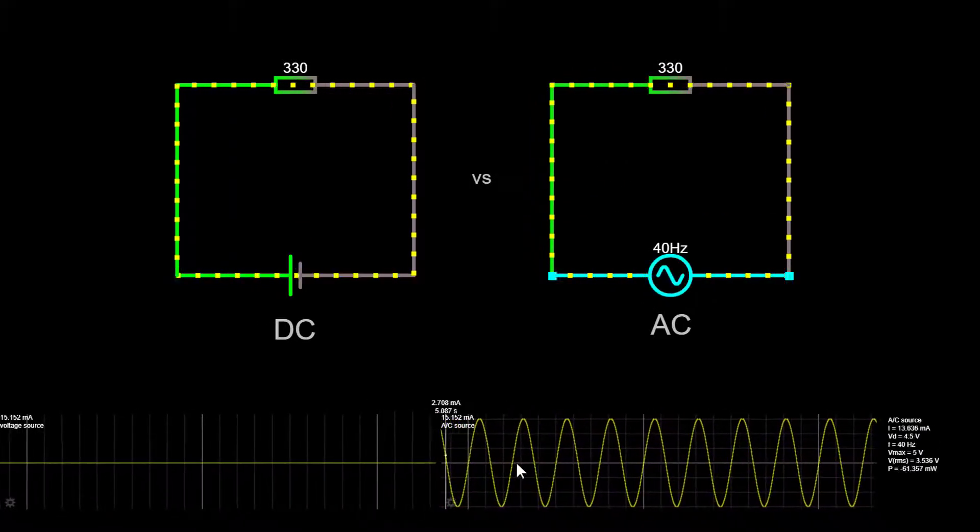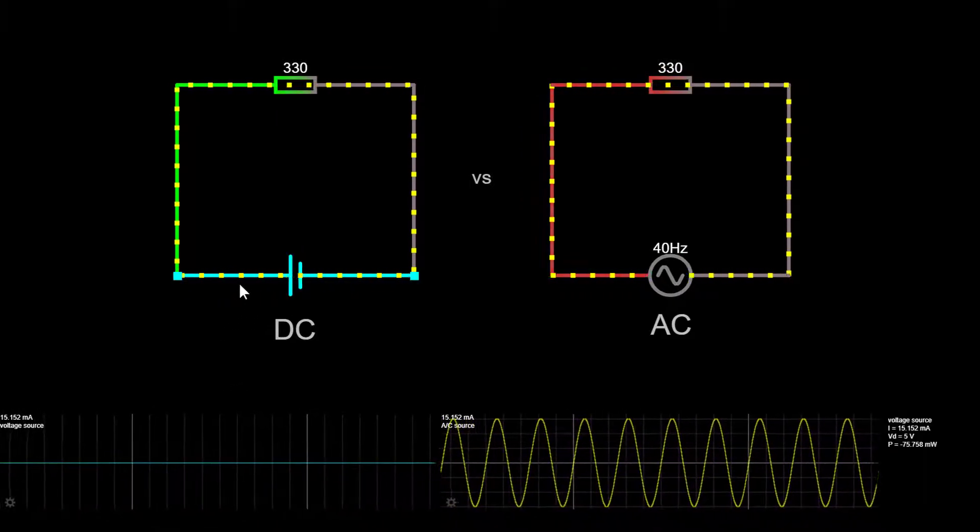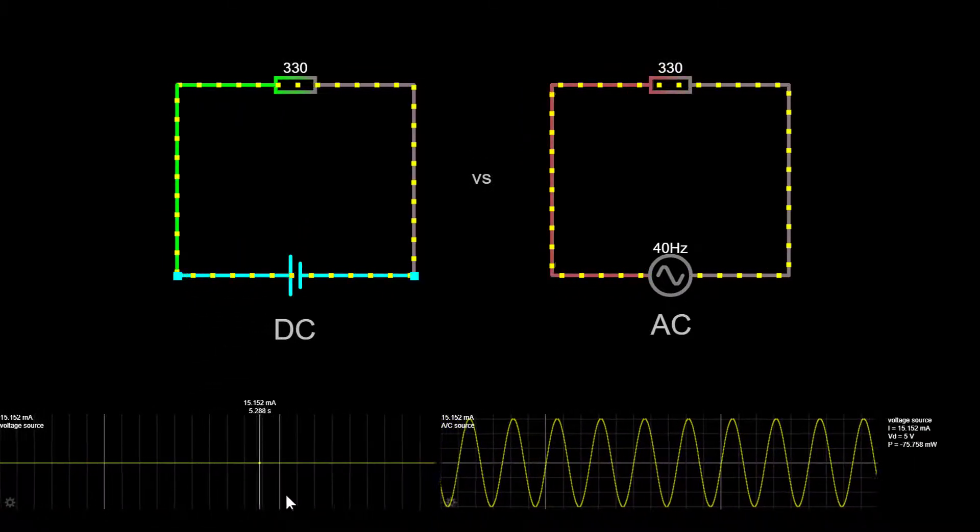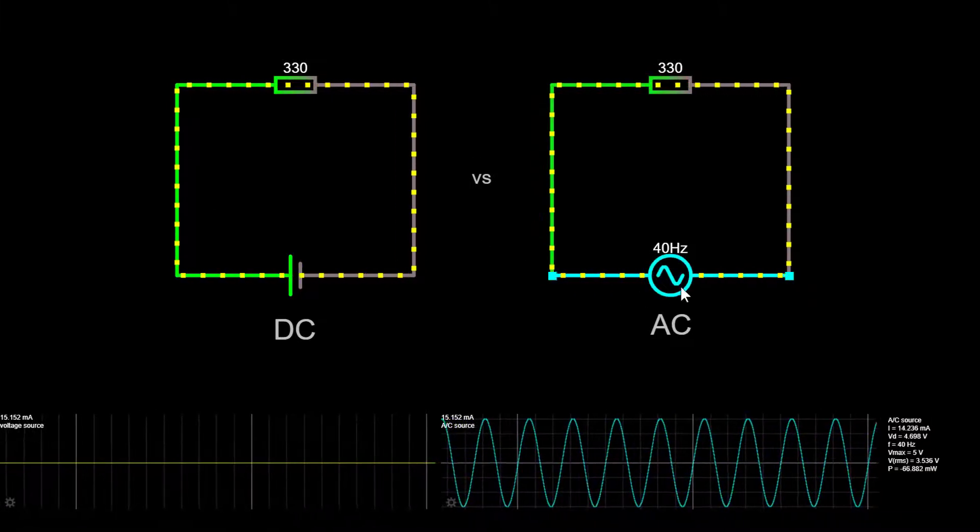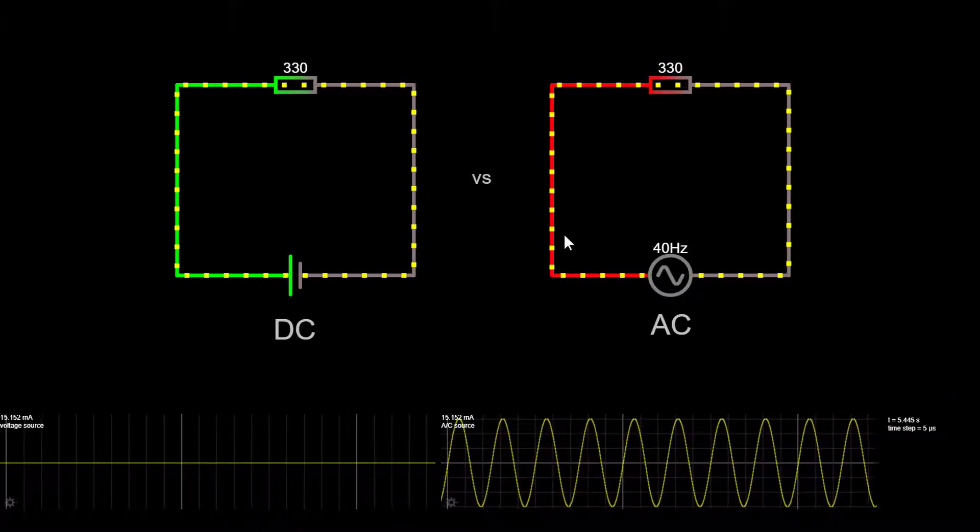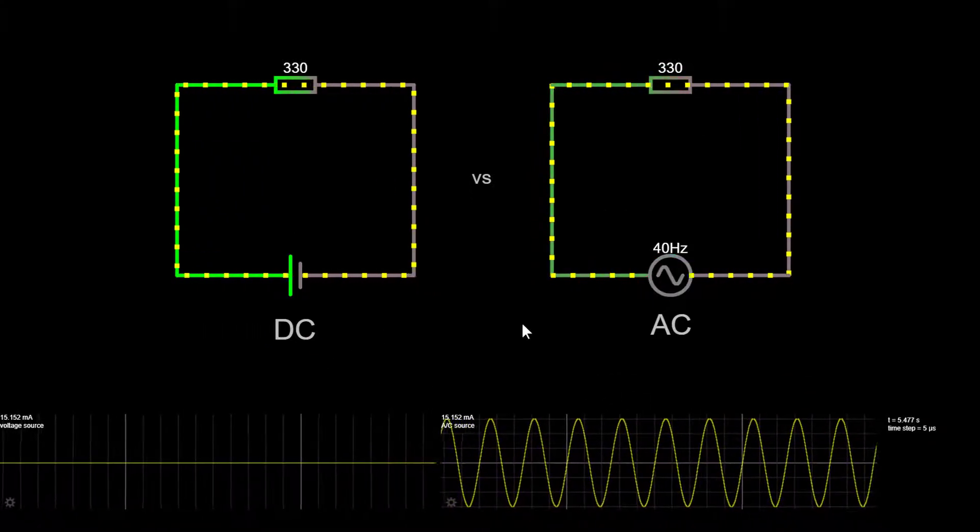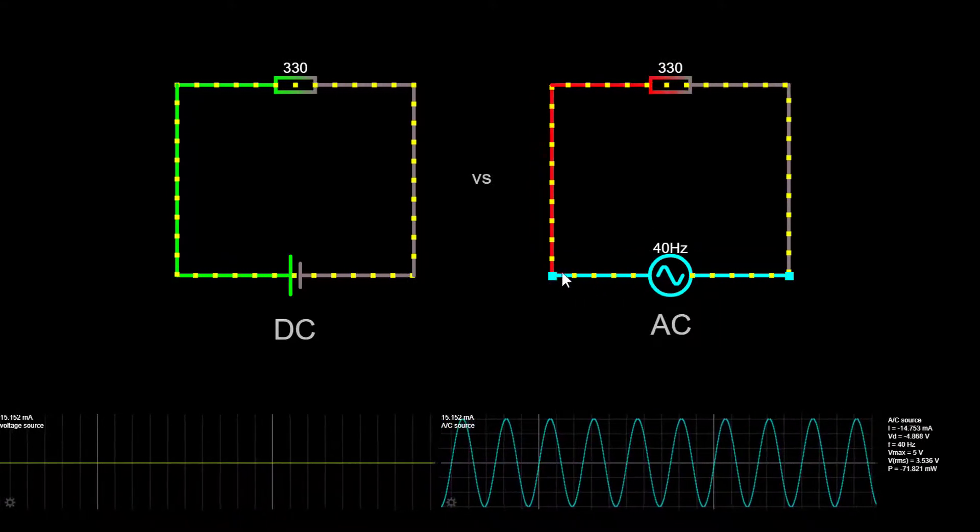Can you see the difference between the two? In direct current, or DC, the electric charge, which is the current, flows in one direction, right? Electric charge in alternating current, or AC, on the other hand, changes direction periodically. The voltage in AC circuits also periodically reverses because the current changes direction.